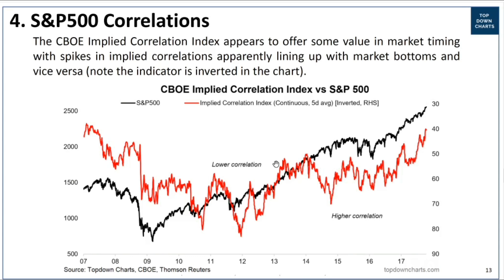The other signal you can get is when correlations go in the opposite direction - when they become very low. That's basically the opposite scenario when the market is topping out short term. Low correlations may reflect an emerging weakness in the market because some stocks are doing well and others are not doing so well. There's also a bit of complacency around it. This is actually what we're seeing right now.